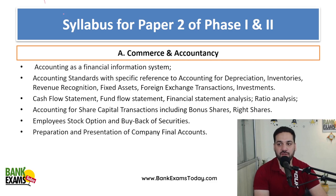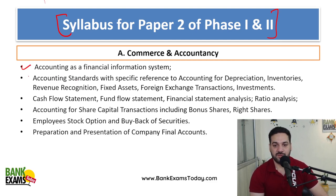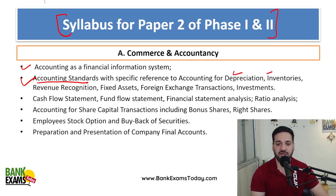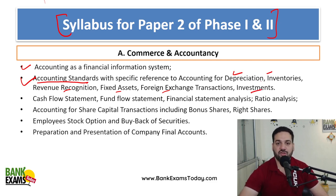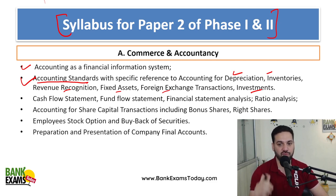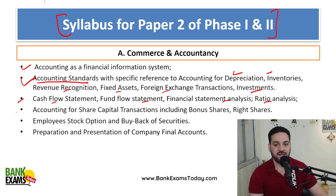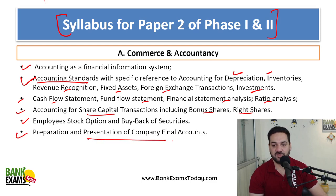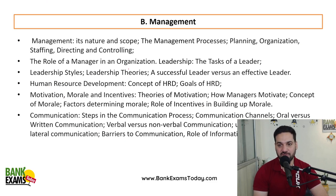The syllabus for paper two — which is common for phase one and phase two — starts with accountancy: accounting as financial information, accounting standards with respect to depreciation, inventory, revenue recognition, fixed assets, foreign exchange transactions, and investments. You are not supposed to do all accounting standards — only certain ones are required. Also covered: cash flow statement, fund flow statement, financial statement analysis and ratio analysis, accounting for share capital transactions like bonus shares, right shares, ESOPs and buyback of shares, and preparation and presentation of company final accounts.